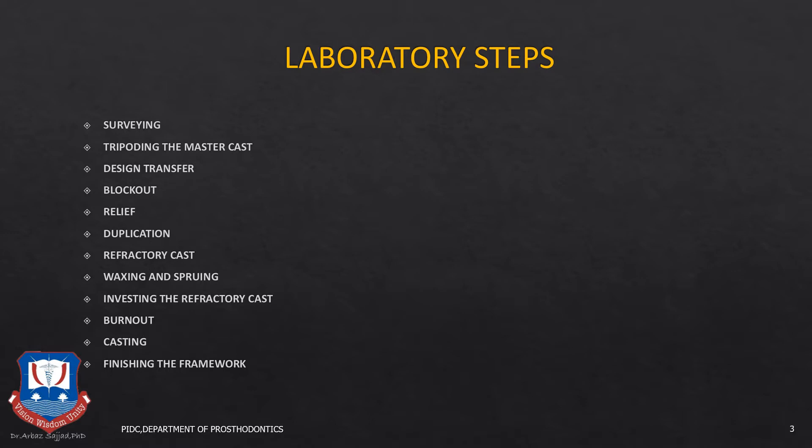On the refractory cast you do the wax up and spruing of the cast partial design. This is followed by investing of the refractory cast, followed by casting and divestment. After divestment the finished casting is retrieved, it is finished, and this brings us to the end of the laboratory steps.